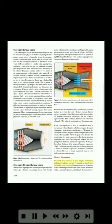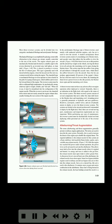Thrust reversers: as aircraft have increased in gross weights with higher landing airspeeds, the problem of stopping an aircraft after landing has greatly increased. In many instances, the aircraft brakes can no longer be relied upon solely to slow the aircraft within a reasonable distance immediately after touchdown. Most thrust reverser systems can be divided into two categories: mechanical blockage and aerodynamic blockage. Mechanical blockage is accomplished by placing a removable obstruction in the exhaust gas stream, usually somewhat to the rear of the nozzle. The engine exhaust gases are mechanically blocked and diverted at a suitable angle in the reverse direction by an inverted cone, half-sphere, or clamshell. This type is generally used with ducted turbofan engines, where the fan and core flow mix in a common nozzle before exiting the engine.